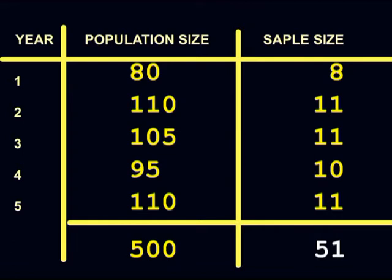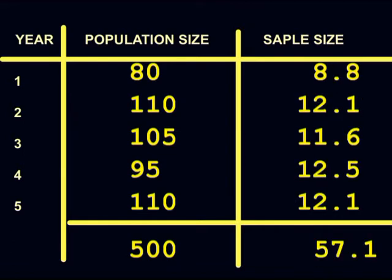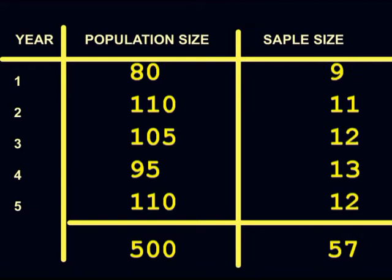If we change the sample size to 55, the sample sizes of each year are as shown in the table. But these still add up to 57.1 and not 55. If they are rounded in a normal way, the total becomes 57.